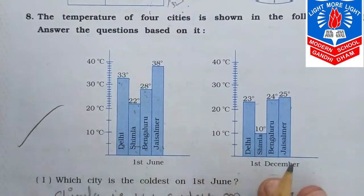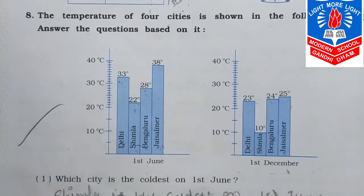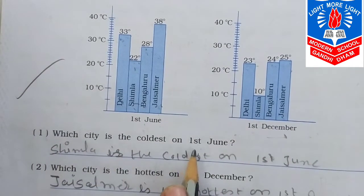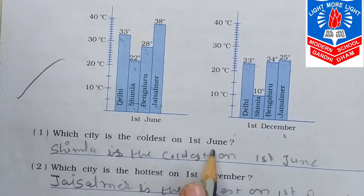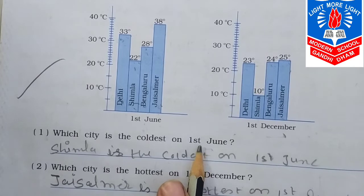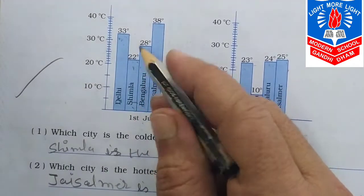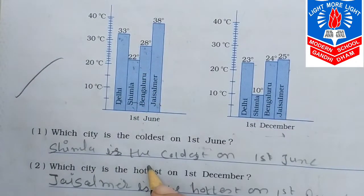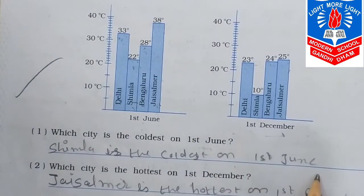First we observe this bar graph, then we give the answer. Which city is the coldest on 1st June? Coldest means the city with the lowest temperature on 1st June. That is Shimla — only 22°C. We write: Shimla is the coldest on 1st June.